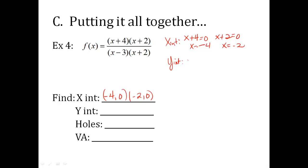Y intercepts, you put in zeros for every single x value. So I have zero plus four times zero plus two over zero minus three times zero plus two. That's four times two over negative three times two. Eight over negative six, which reduces to negative four thirds. So there's my y intercept: zero comma negative four thirds.